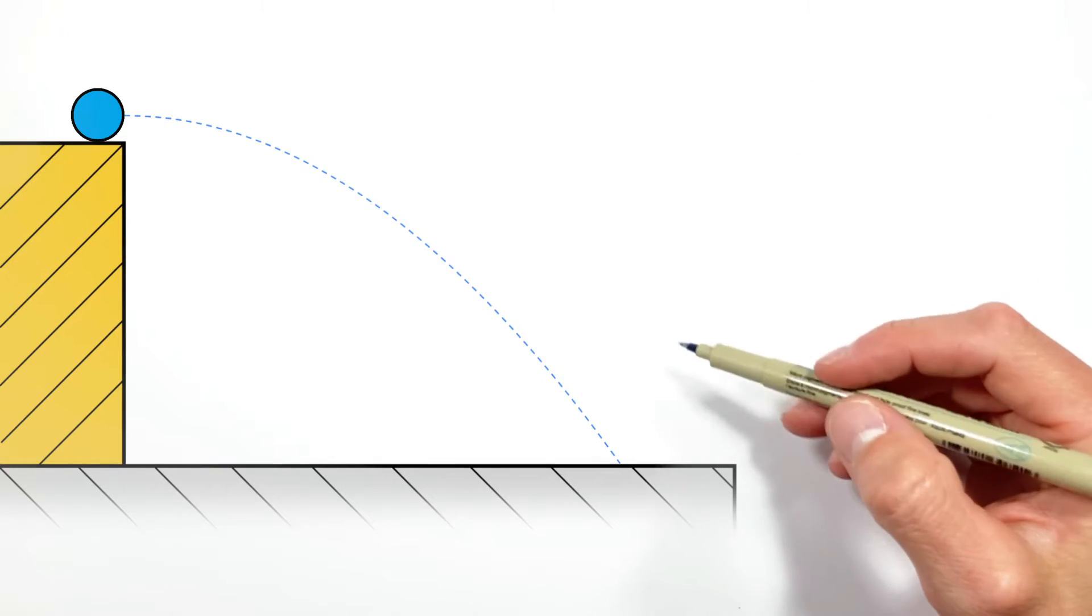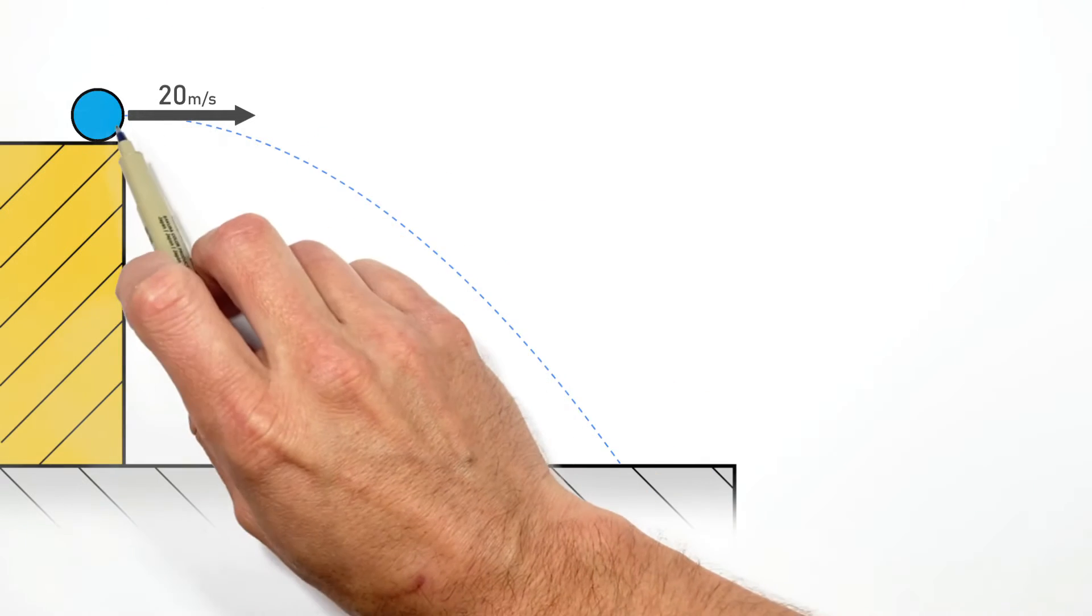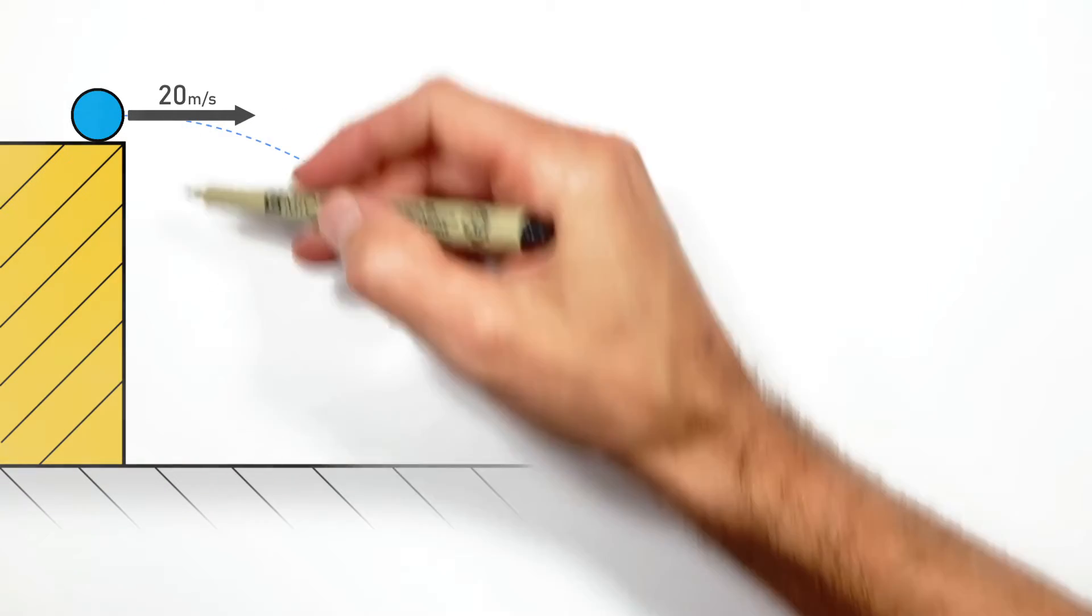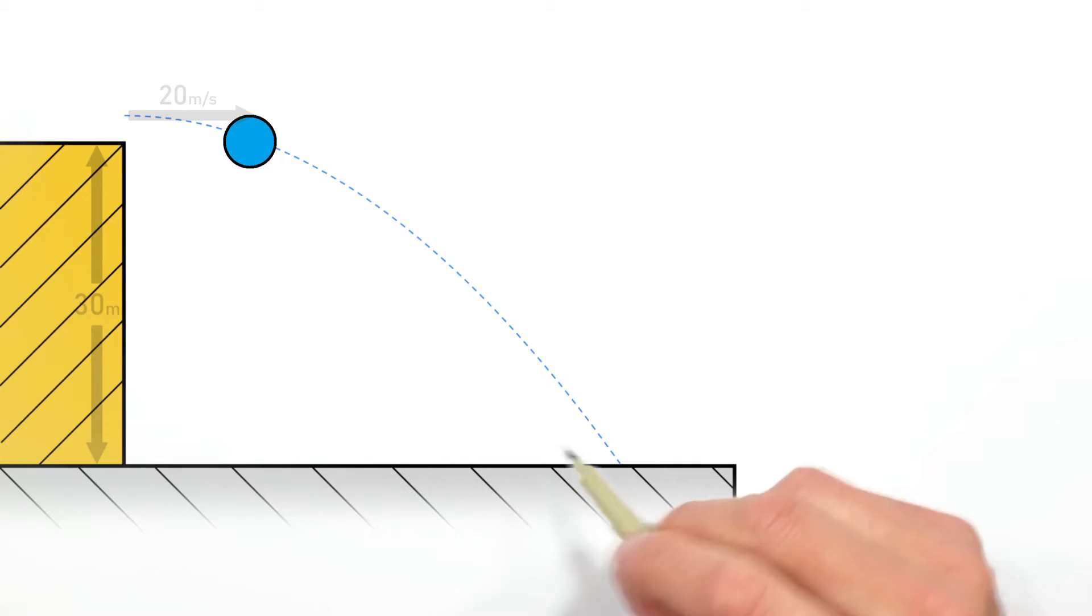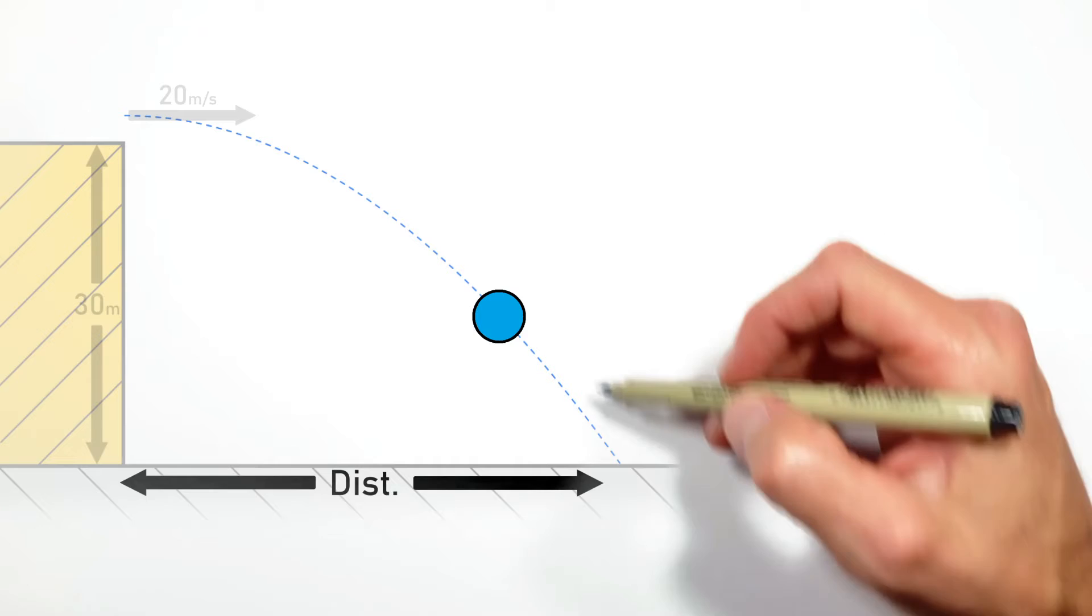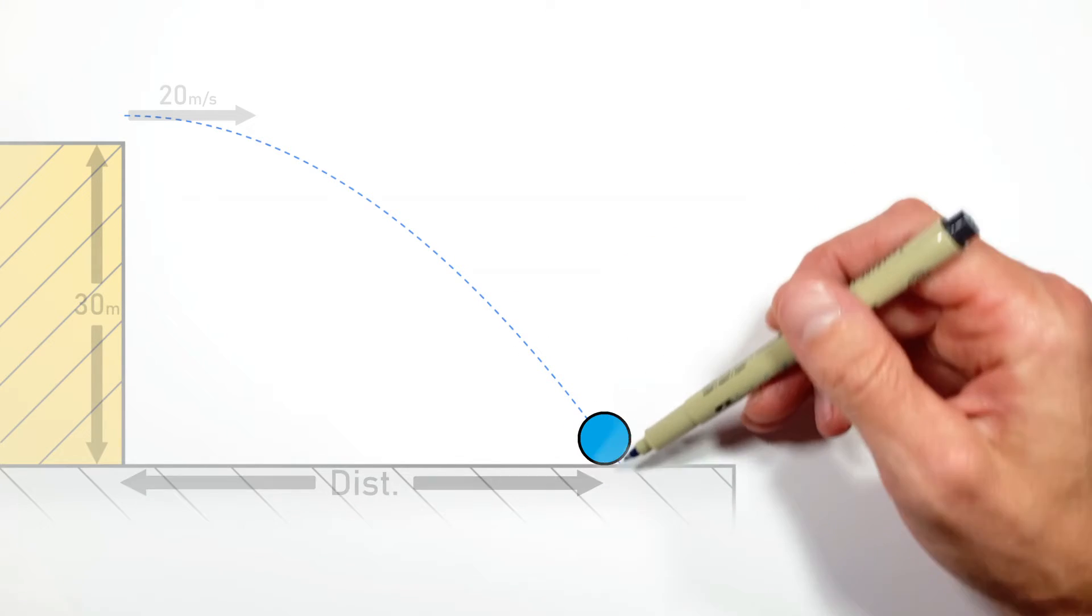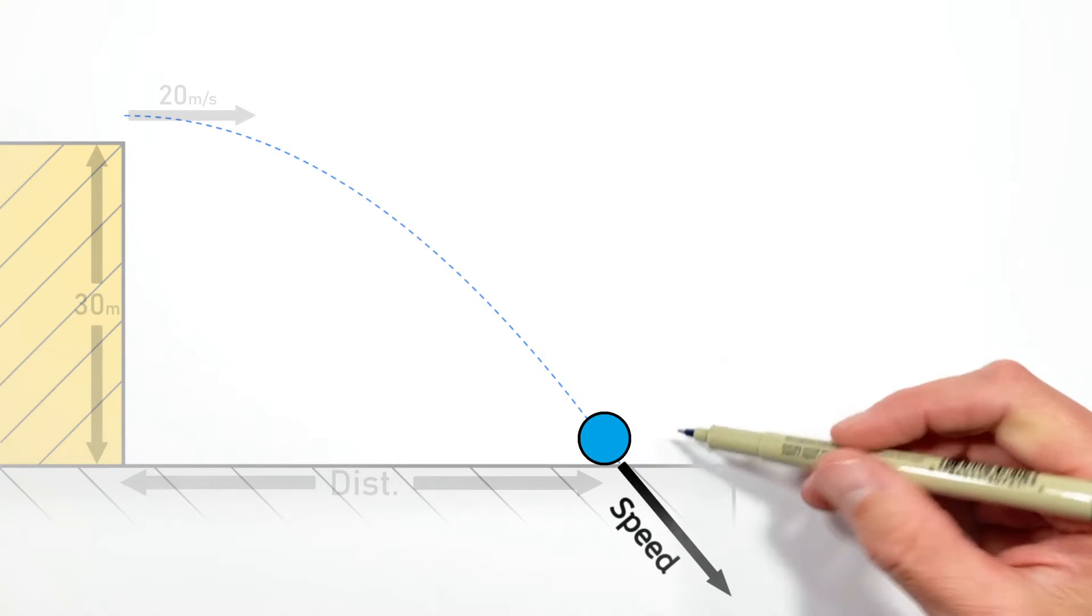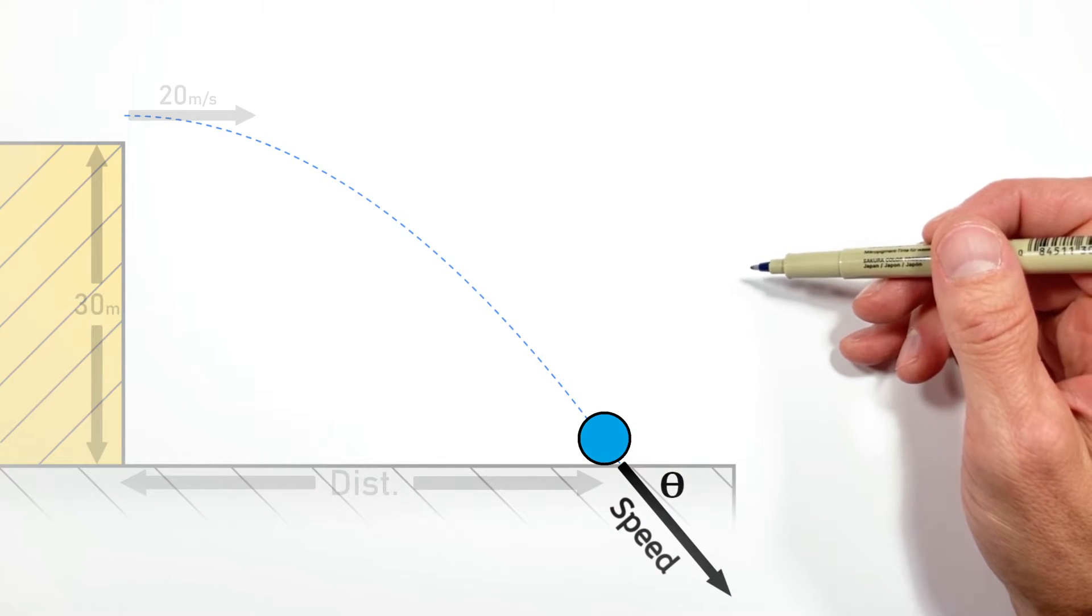Today I want to walk you through a projectile motion problem where we take a ball and toss it at 20 meters per second horizontally off the top of a 30 meter high cliff. In this problem, I want to show you how to solve for the horizontal distance the ball will travel and the final speed and direction when it lands on the ground.